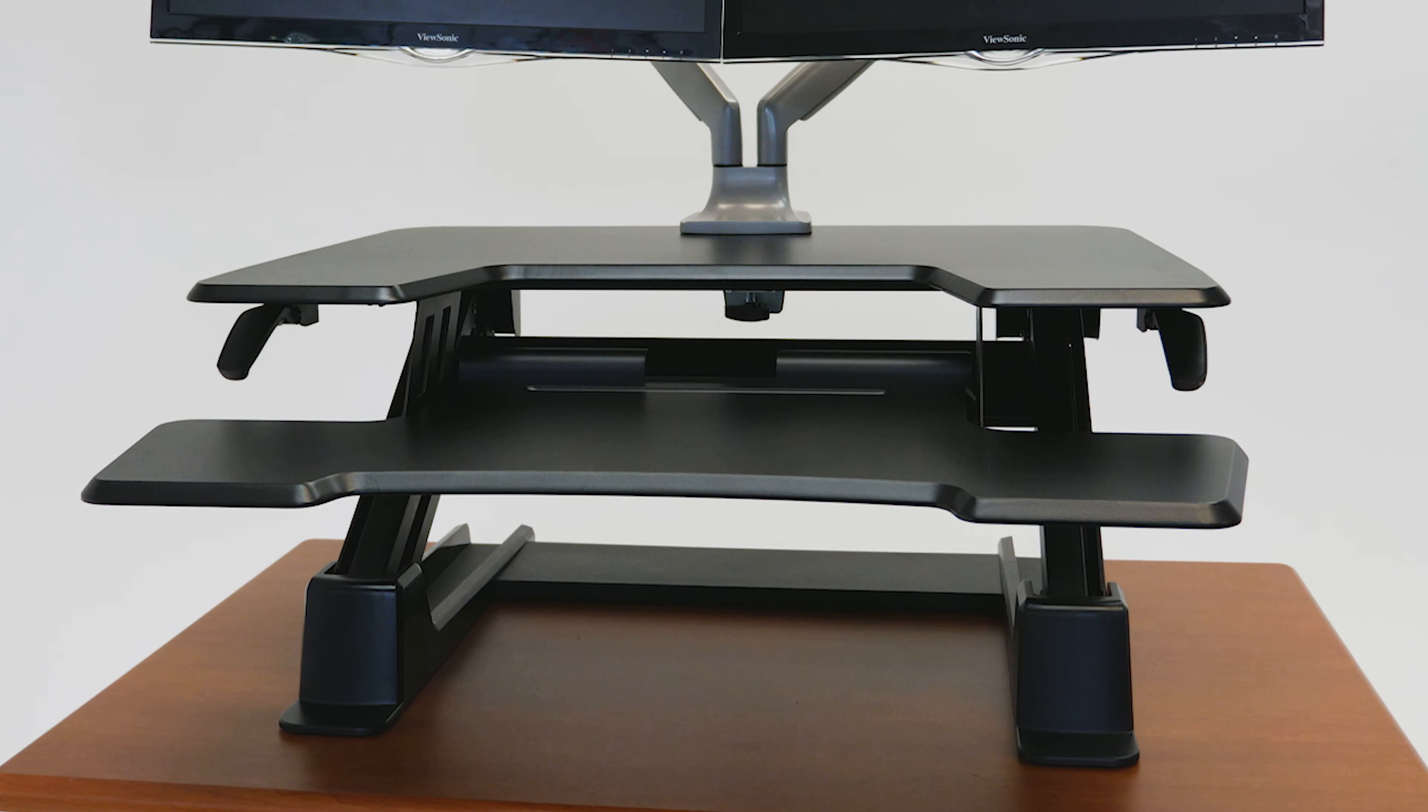It also has an impressive top height of 20 inches, which supports users up to 6'7". One design feature that separates the Eureka 36 Gen 2 from other similar models is its extra deep keyboard tray at 17 inches.